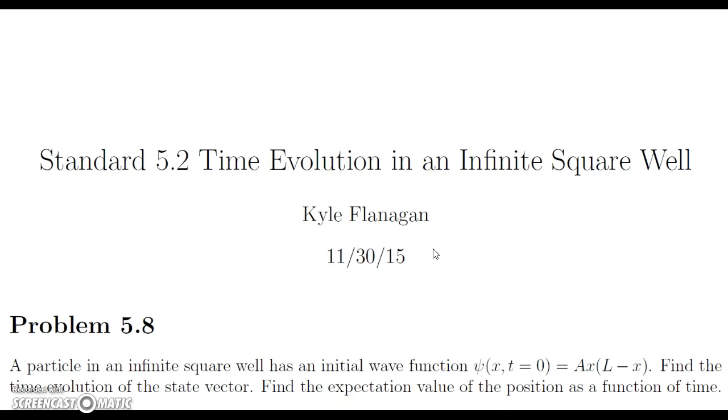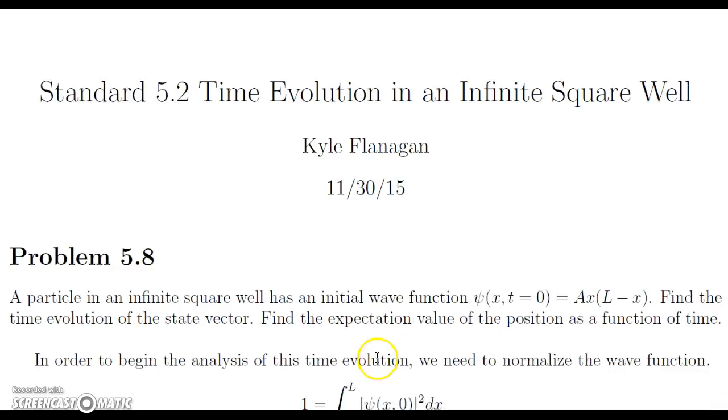Hello. Today we're going to be doing standard 5.2, which is on the time evolution in an infinite square well. We're going to be doing problem 5.8 out of McIntyre. The question states a particle in an infinite square well has an initial wave function ψ(x, t=0) which is equal to A times x times (L minus x), where L is the length of the square well. We want to find the time evolution of the state vector and also the expectation value of the position as a function of time, not just the expectation value of the ground state.